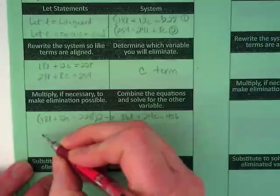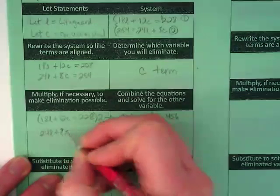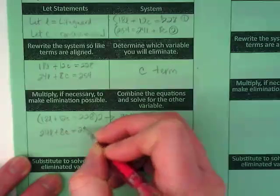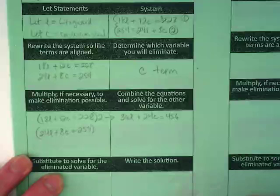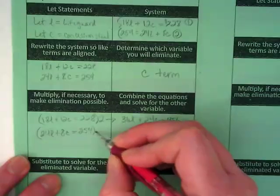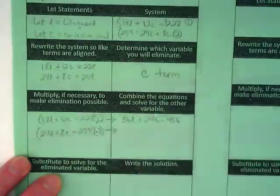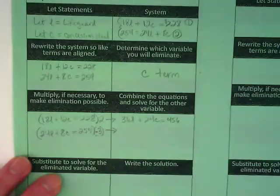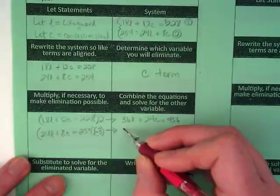Okay, let's rewrite the second equation, 24L plus 8C equals 254. To get our C term to eliminate, we have to multiply this by negative 3.